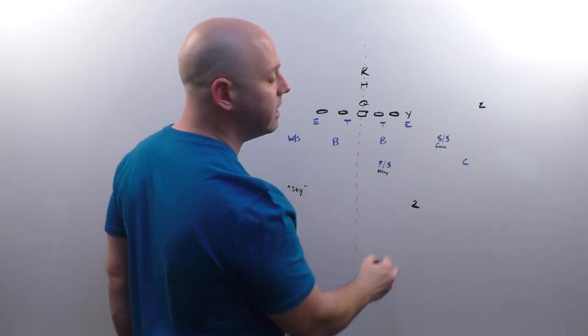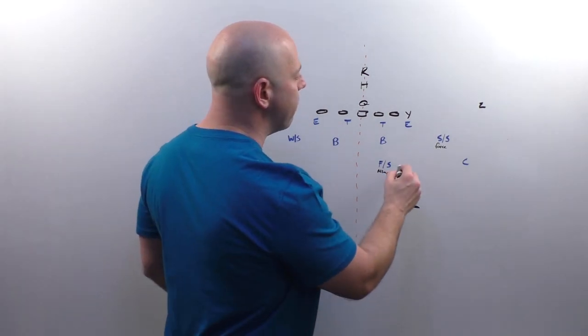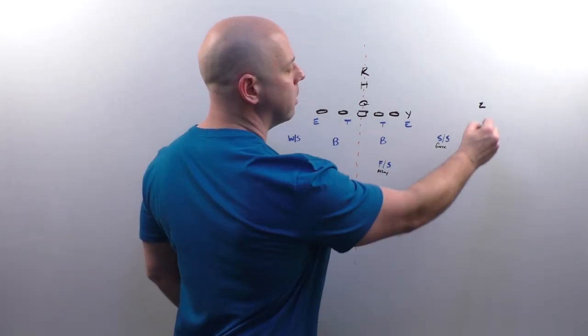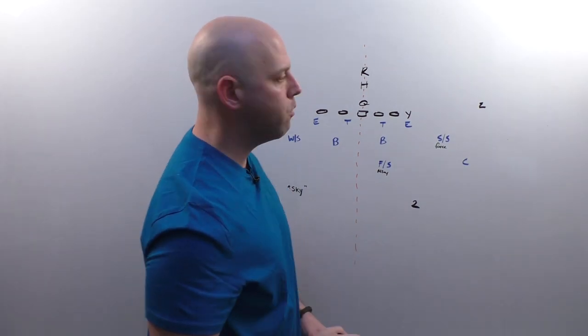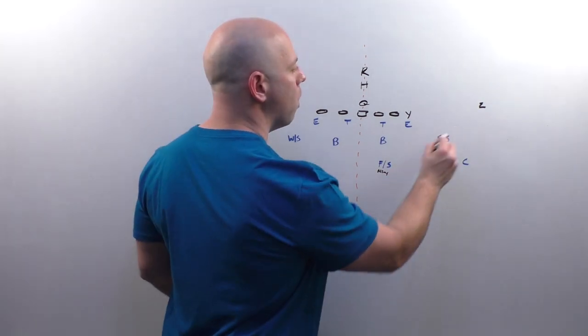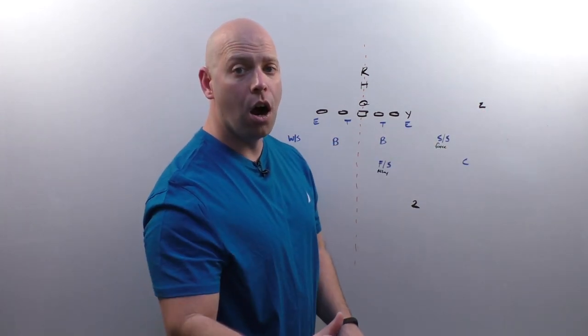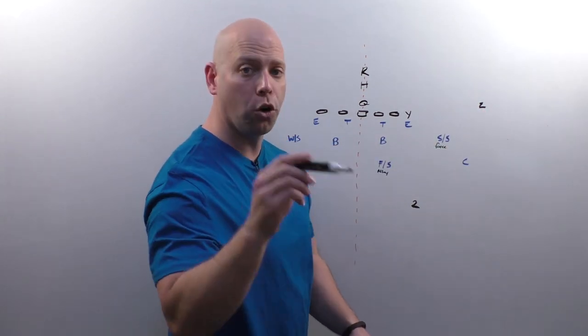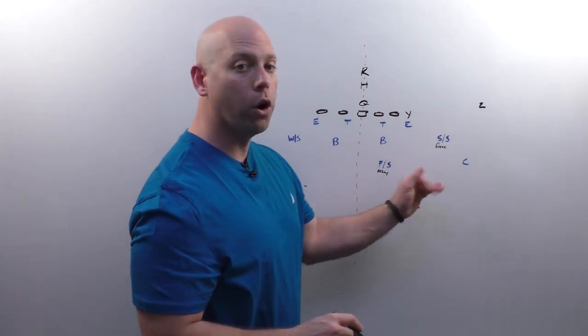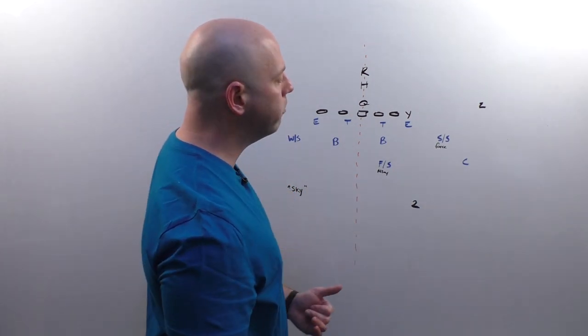His pass responsibility is he's going to check for vertical of number two. If number two runs a seam route, he's got him. And then if number two does not run a seam route, he's going to rob number one. And what we mean by that is that he's going to run to the inside hip of the number one receiver underneath him. So he's going to run on a curl route. He'd be robbing the curl on a post route, be overtaking the post, underneath it.